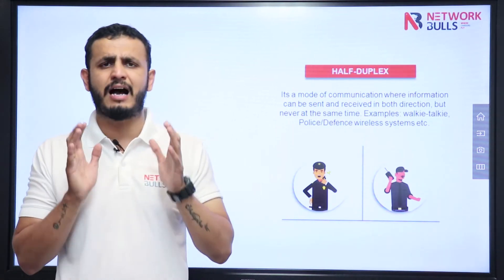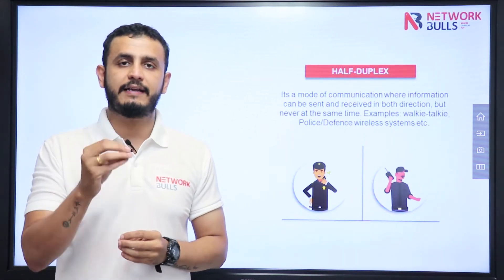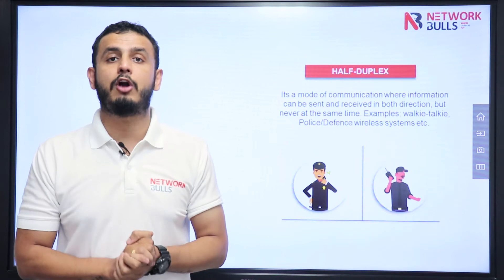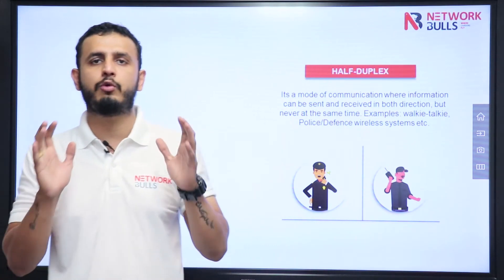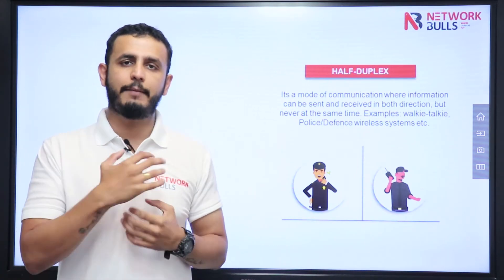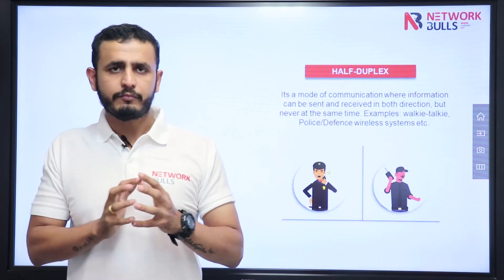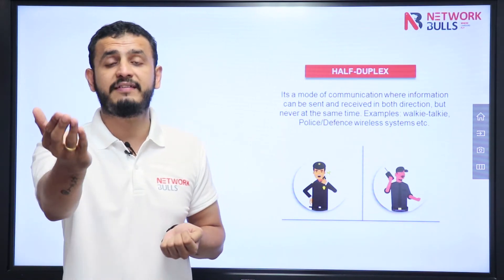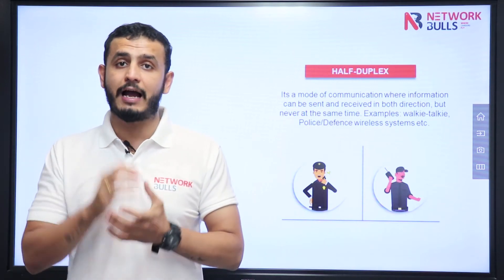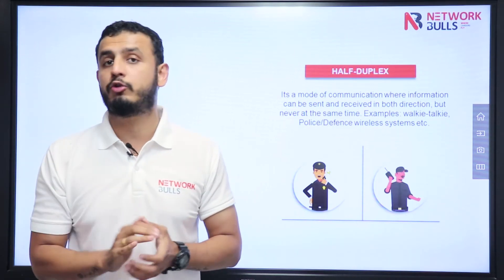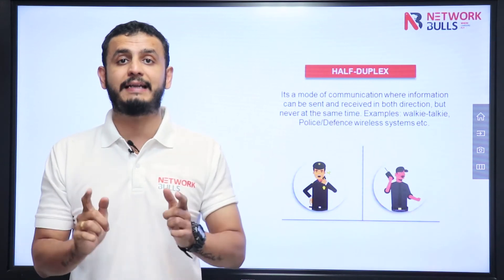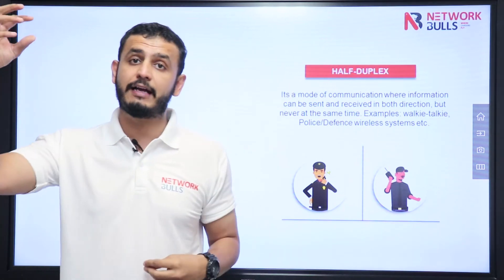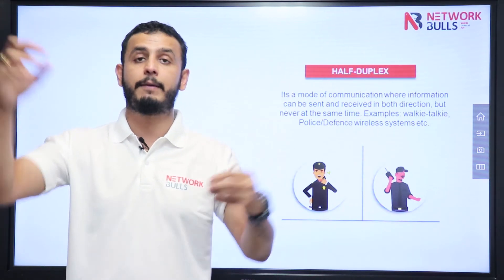Now we have half duplex. What is half duplex? Sender can send, receiver can receive. Receiver can also send and sender can also receive, but not at the same time. I think all of you have used a walkie-talkie. Let's say I am A, you are B. Now I want to send my message — I will say hello Charlie and send my message. When you have to send your message you will again say hello Charlie, meaning I am telling the other person please don't speak at that time. Because one party can transmit information at one time. Sender can send, receiver can receive, receiver can also send, sender can receive — but not at the same time.